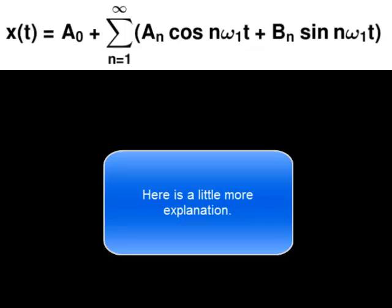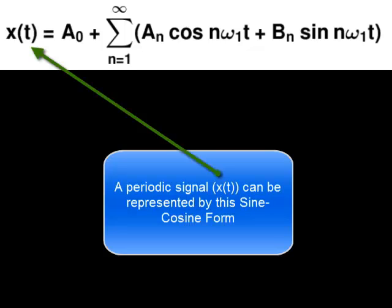Here's a little more explanation. A periodic function X can be represented by this sine-cosine form.